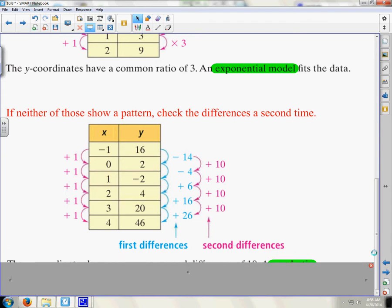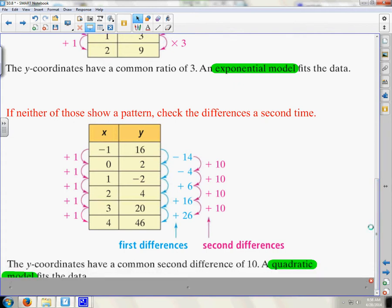And then, lastly, if you look at this, it's minus 14, minus 4, plus 6, plus 16, plus 26. This is their first difference. You have to find the first difference. And then, the second difference, if you look, they're all adding 10. Each time, it's adding 10. This is how you model a quadratic function.